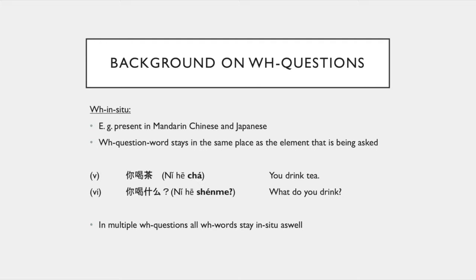For WH in situ, this happens, for example, in Mandarin Chinese and Japanese. The WH question word stays in the same place as the element being asked for. For example, in Chinese 'ni he cha' means 'you drink tea', and 'ni he sheme' means 'what do you drink?' — the question word stays in the same position as 'tea'. And in multiple WH questions, all WH words also stay in situ.